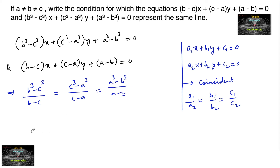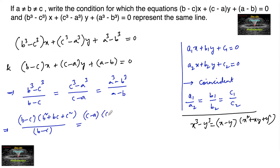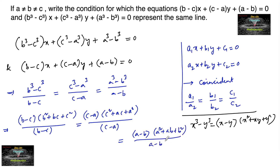Using the formula x³ minus y³ = (x minus y)(x² + xy + y²), we expand: (b³ minus c³)/(b minus c) = (b minus c)(b² + bc + c²)/(b minus c), and similarly (c³ minus a³)/(c minus a) = (c² + ac + a²), and (a³ minus b³)/(a minus b) = (a² + ab + b²).